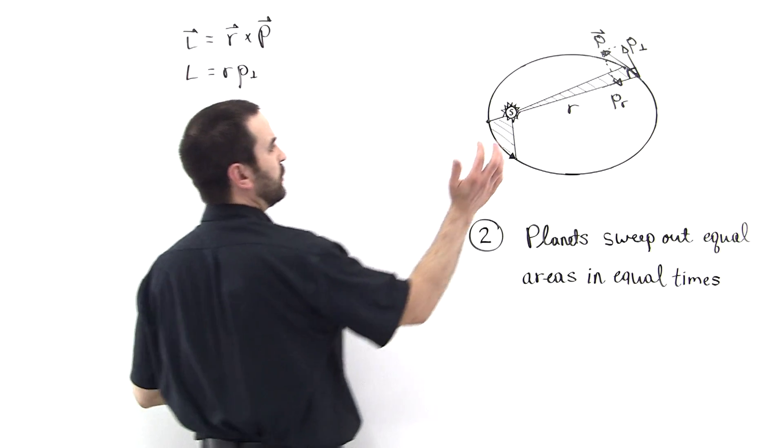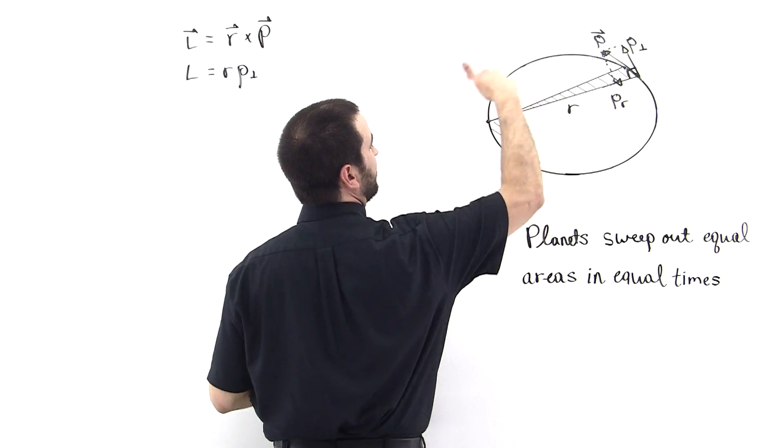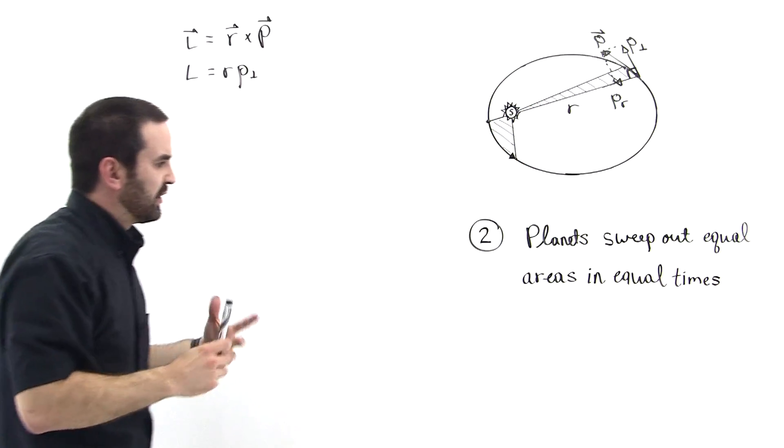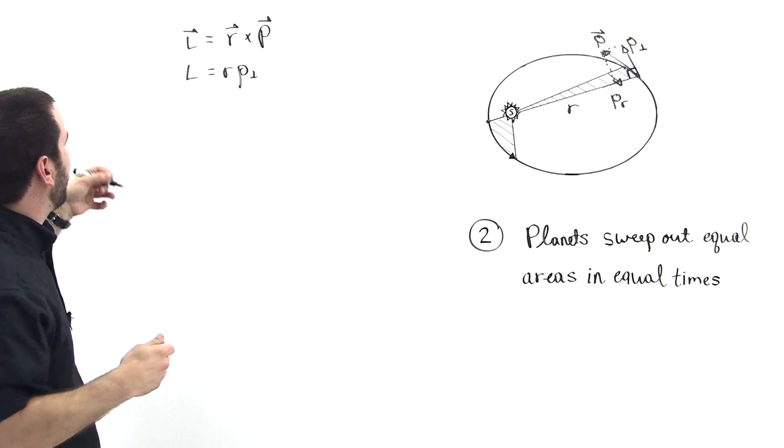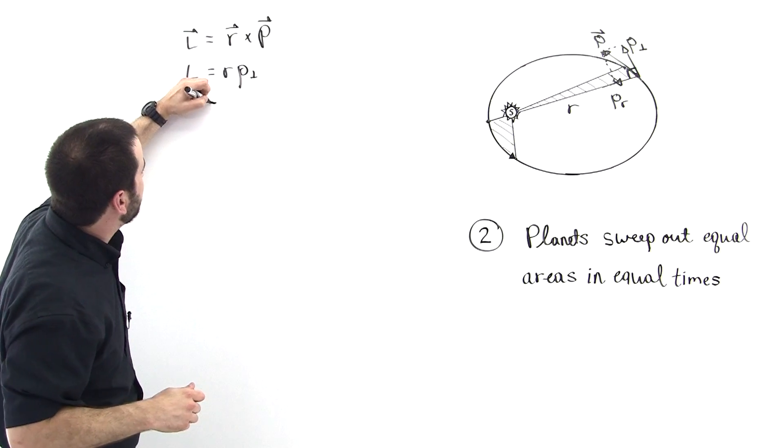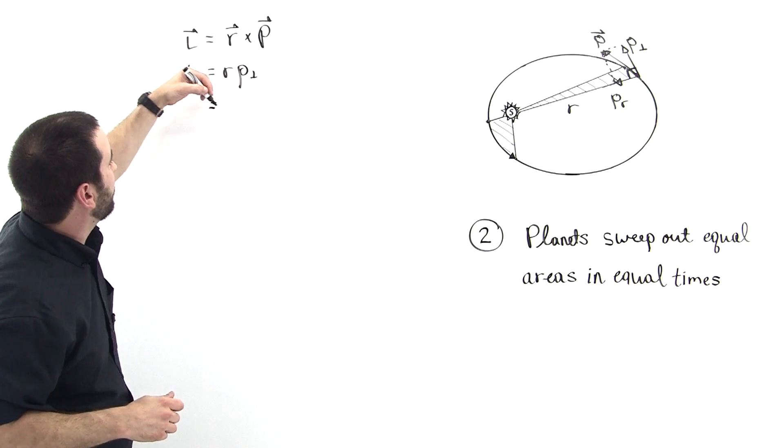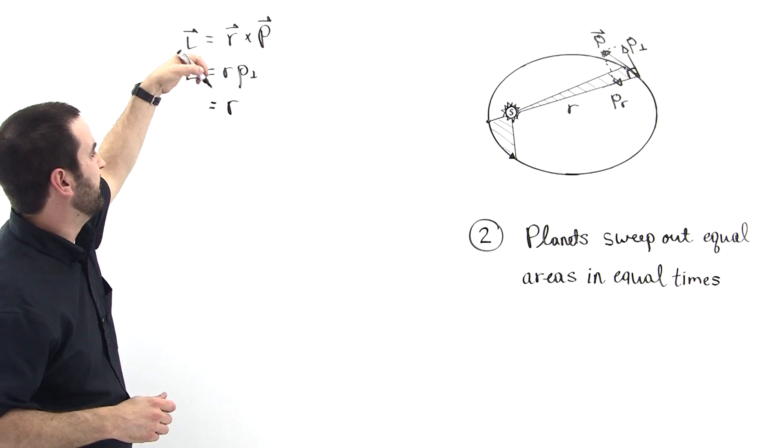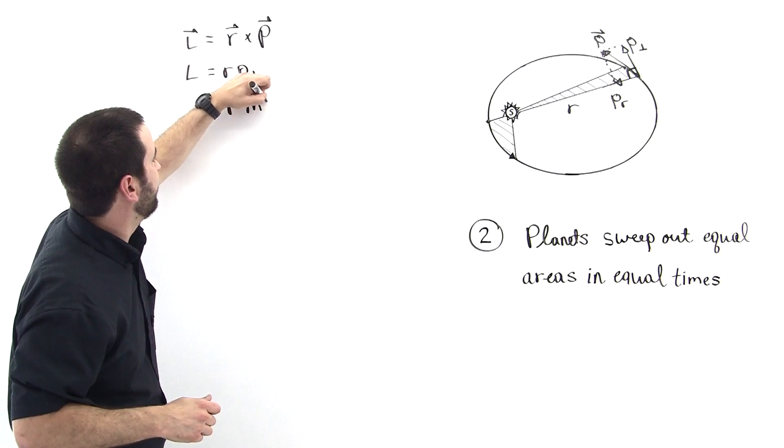So now we're just going to drop the vectors and just realize that the right hand rule says that it's moving around this way and the right hand rule says that the angular momentum will be out of the board. So then we can substitute for p perpendicular, we can put in mv perpendicular, because this is just mv perpendicular.